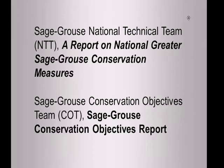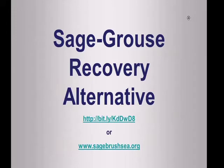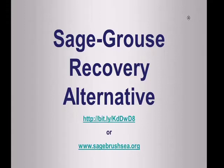All of this is captured in our sage-grouse recovery alternative that many of your organizations endorsed during scoping for the BLM and Forest Service planning process. Feel free to download the 121-page alternative and comments—read, review, memorize, and share it with your friends and family. It is an important baseline conservation alternative we can use to measure the BLM's conservation plans for greater sage-grouse.